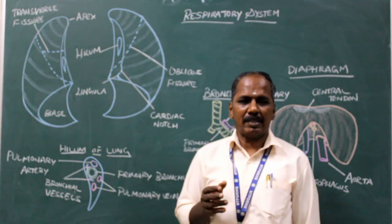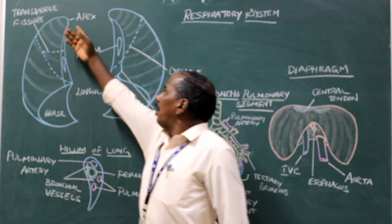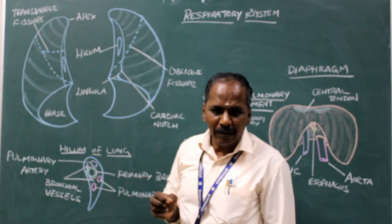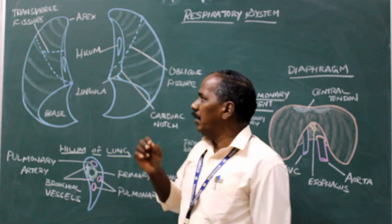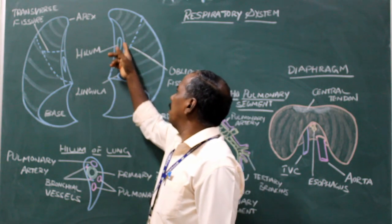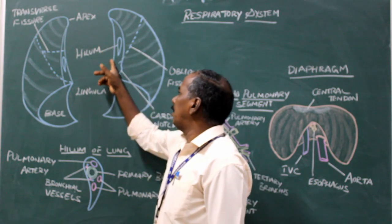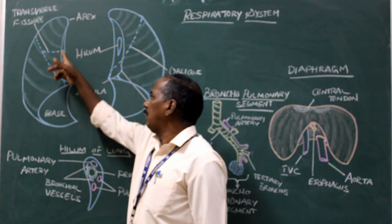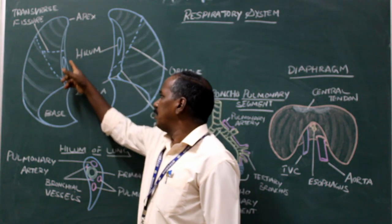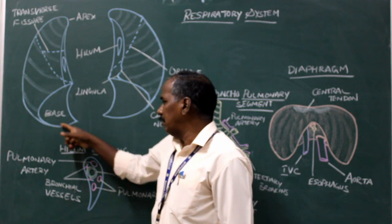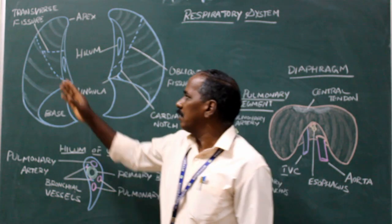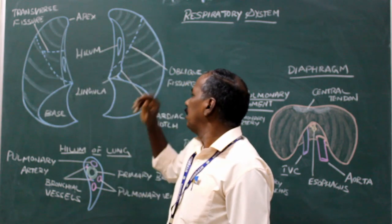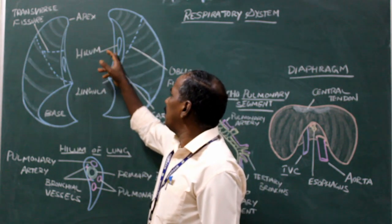General features: It has a base or inferior surface, three borders — anterior border, posterior border, and inferior border — and two surfaces: costal surface and medial surface.